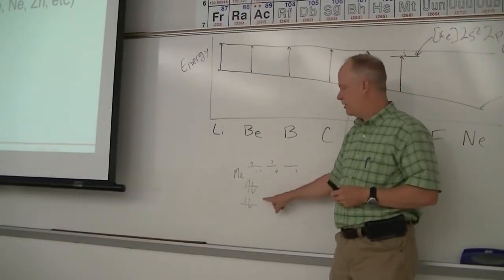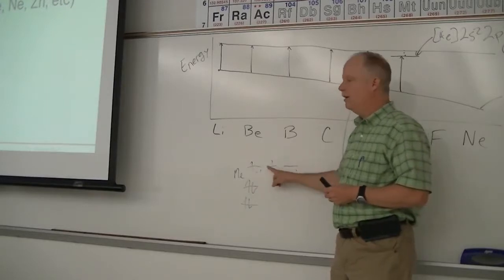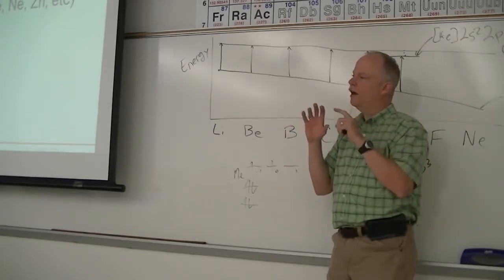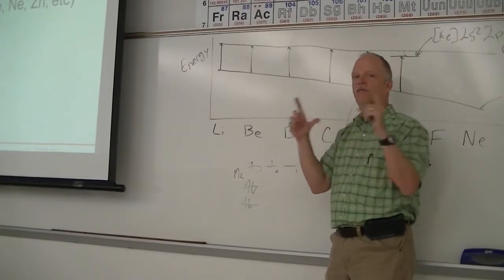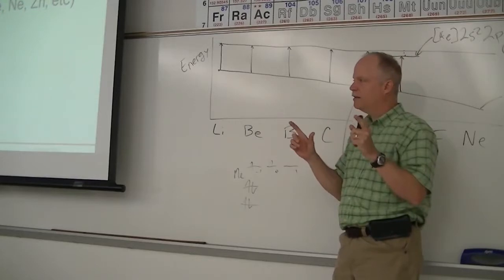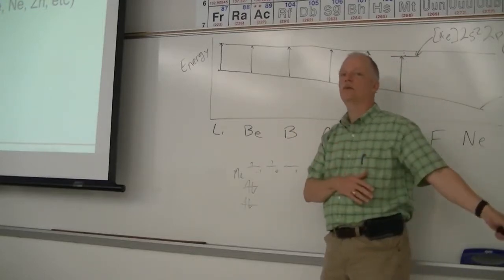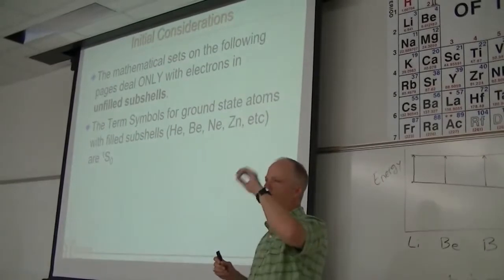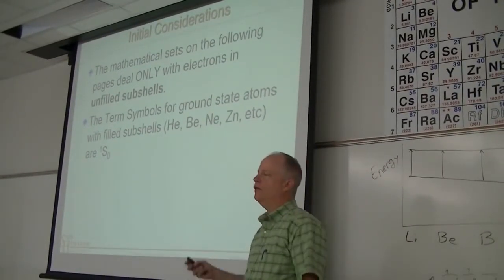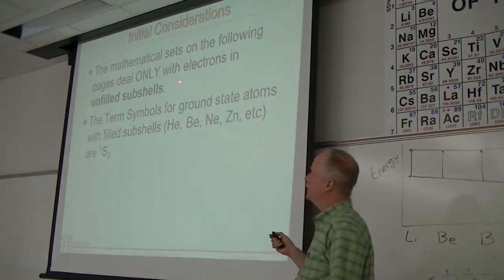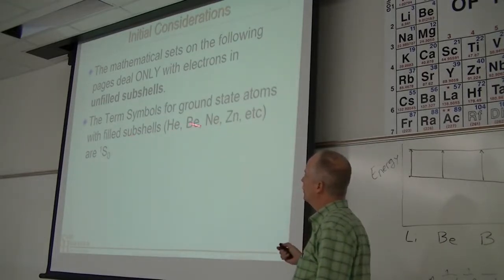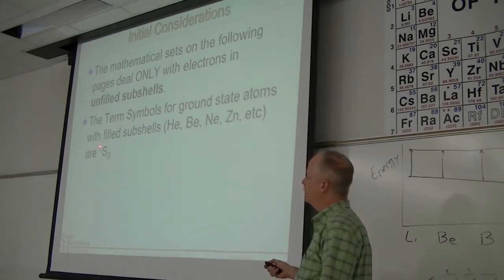We're not dealing with the electrons in the 2s or the 1s. We're just looking for the unpaired or paired electrons in an unfilled subshell, like a p subshell, a d subshell, or an s subshell. If that subshell is filled, we don't worry about those electrons. The mathematical sets we're going to be dealing with are just for the electrons in those unfilled subshells. The term symbols for the ground state atoms — like helium, beryllium, neon — are by definition a singlet S0. If you have helium, there are no unfilled subshells, so that ground state term symbol is a singlet.